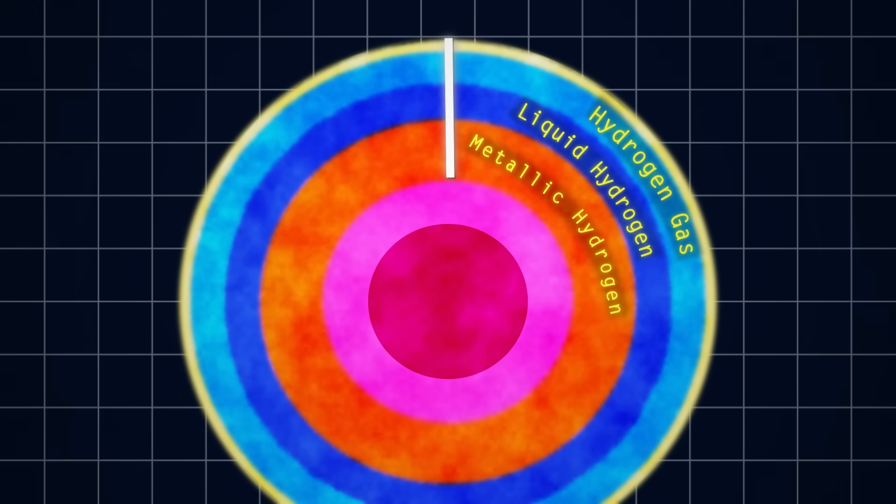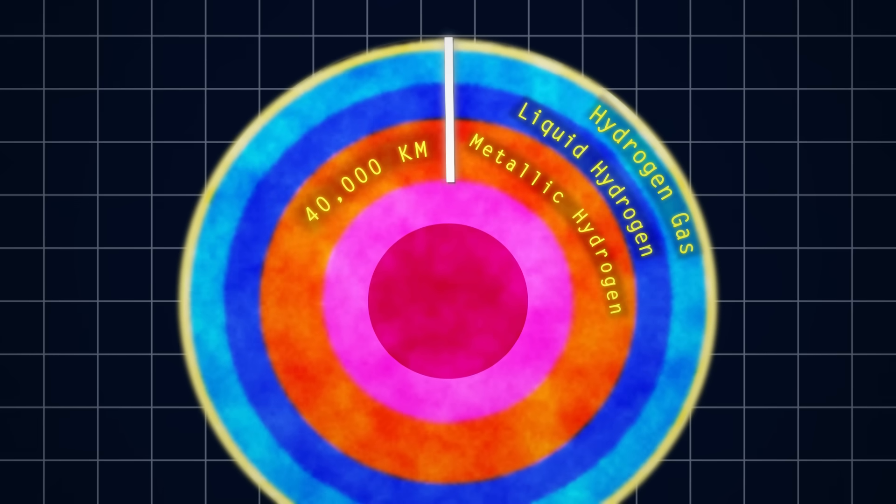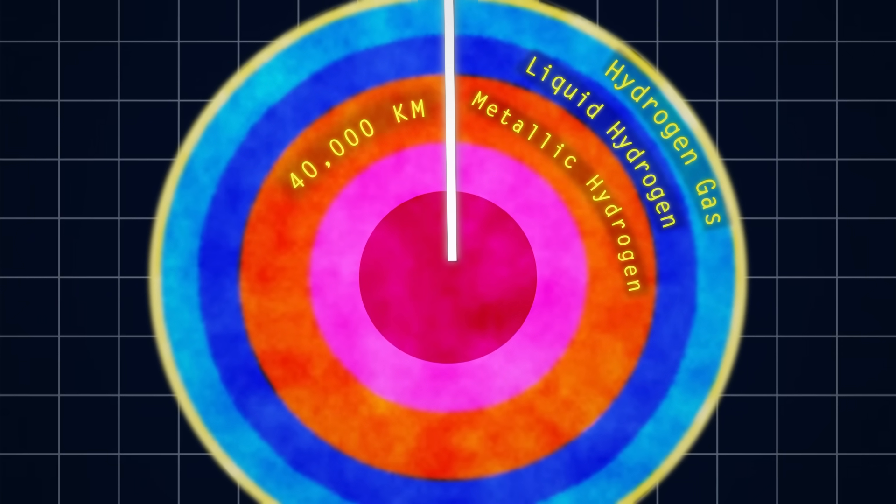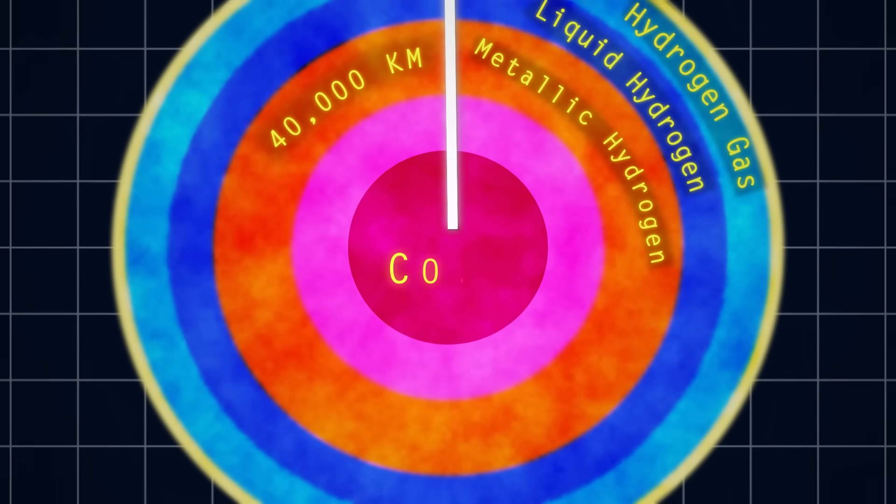This liquid metallic hydrogen makes up the majority of the planet's interior. It's about 40,000 kilometers deep, and down there, at the bottom of everything, lies the solid core of Jupiter.